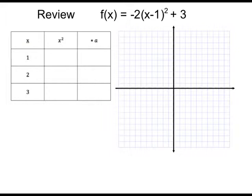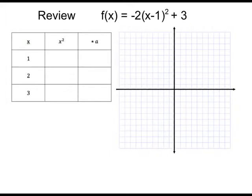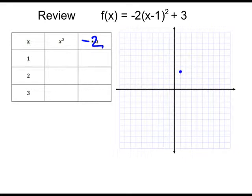So just as a review, we would first start by saying our leading coefficient is negative 2, which is our a value. So my a is going to be negative 2. Then what we would do is set the inside of the parentheses equal to 0, and that would tell us our horizontal transformation — we're going to go 1 to the right. And the 3 at the end means it's a vertical shift of 3 units up. So my vertex is going to be about right there. Now we draw the axis of symmetry if that's helpful, and then we complete our transformation.